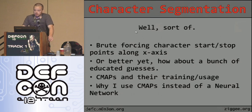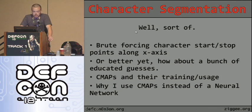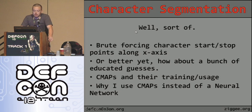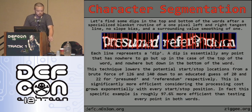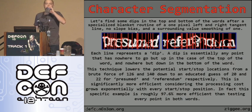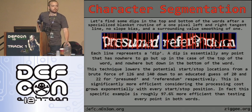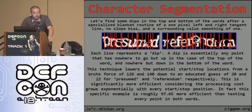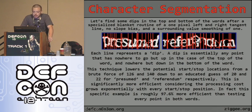Now onto character segmentation, one of the harder parts. Brute-forcing character start and stop points along the x-axis is exponentially challenging and not practical. Instead, I came up with educated guesses and use cmaps — I'll explain their training usage and why I use cmaps instead of a neural network shortly. For segmentation, I find dips in the top and bottom of the words using a specialized version of my blanket routine. Ignoring the vertical lines, you can see how the blanket routine dips into the crevices between characters.